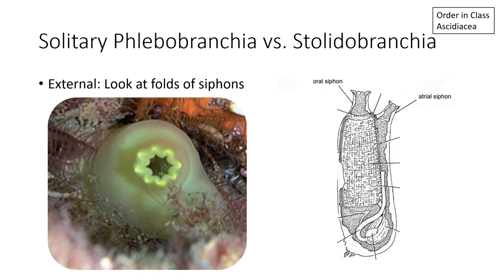So let's try to differentiate between solitary Phlebobranchia and solitary Stolidobranchia. If it's a solitary Aplusobranchia, it's a very narrow set of possibilities — one family, Diazonidae. But for solitary Phlebobranchia and Stolidobranchia you have many more options. The first thing to do is, if you can, look at the external characteristics of the animal without dissecting it. In particular, you want to look at the oral siphon.